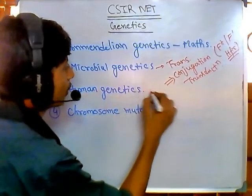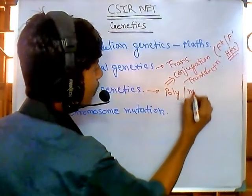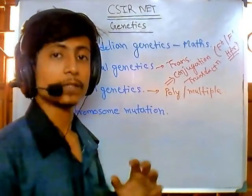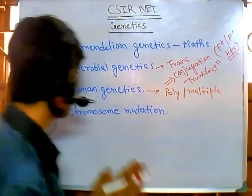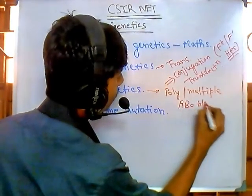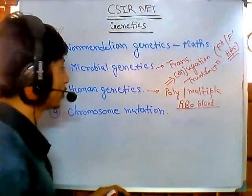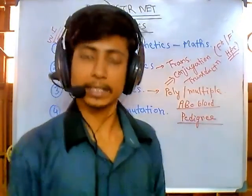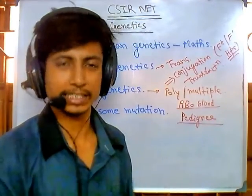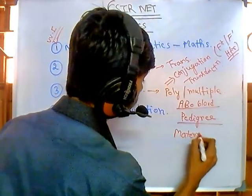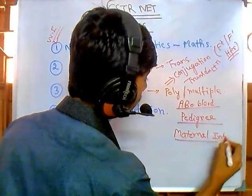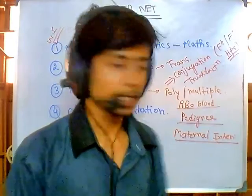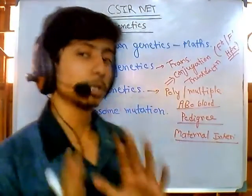The third area is human genetics. In human genetics you need to understand polygenic inheritance, multiple alleles, and inheritance of traits like skin color and height. You also need to understand how genes are regulated under different environmental situations. Majorly important is ABO blood typing, which is a very high-yield topic for CSIR-NET throughout the years. Pedigree analysis is another very important topic — learning how to analyze a pedigree and determine the type of inheritance pattern of a disease. You also need to understand maternal inheritance, such as mitochondrial inheritance, where genes are passed from one generation to the next only via the maternal source.